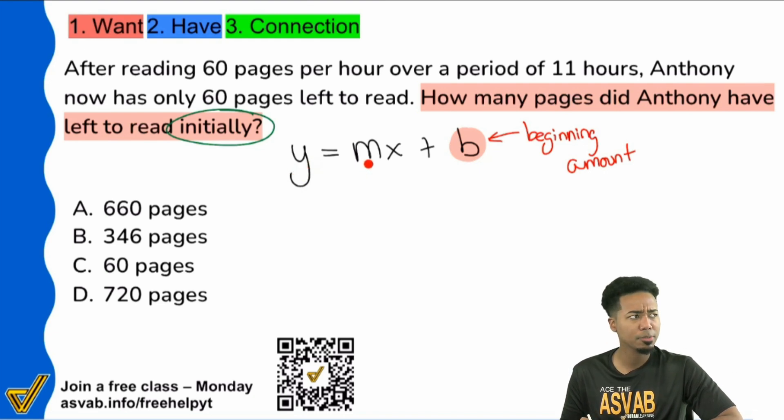M, remember, mx plus b, that's your slope. Now, slope in the real world, that's going to be called a rate. And you may recognize that as something that includes the word per, the word per. The word per gives it away that you're working with a speed or something that tells you how quickly something's moving along. So again, your beginning amount, your ending amount, how much time it took to get there, and here is the speed that you got there with.